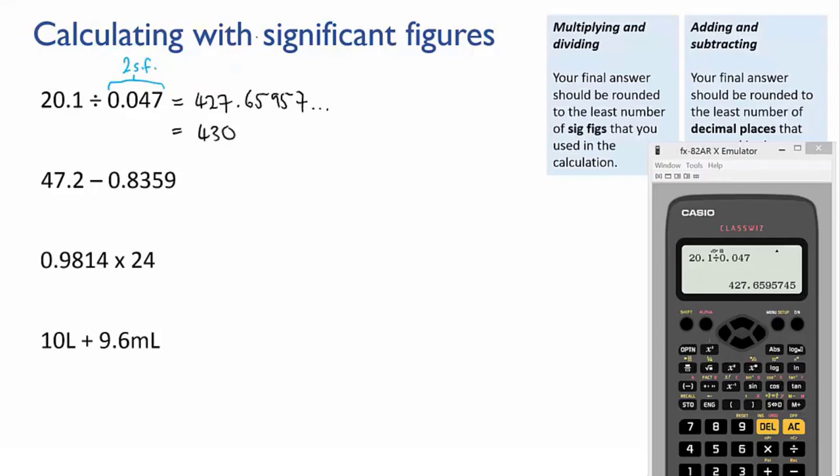Next, 47.2 minus 0.8359. We put it into the calculator and we get 46.3641. Now because this is a subtraction we're looking at decimal places and not sig figs. So the first number has one decimal place and the second has four. Hence our final answer must be rounded to one decimal place and that gives us 46.4.